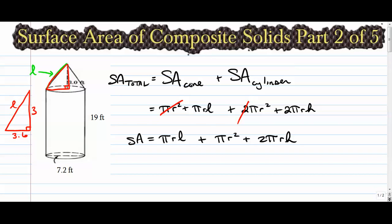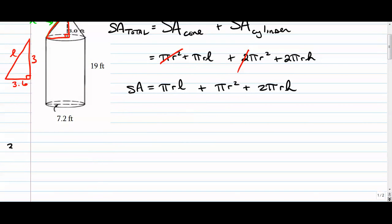So let's find slant height using Pythagorean theorem. So we go 3² + 3.6² = l². And you multiply all that out, hit the square root, and you get yourself an answer. Let's see, that is going to be 4.686. That's your slant height. That'll go right here. So it's π times the radius 3.6 times 4.686.